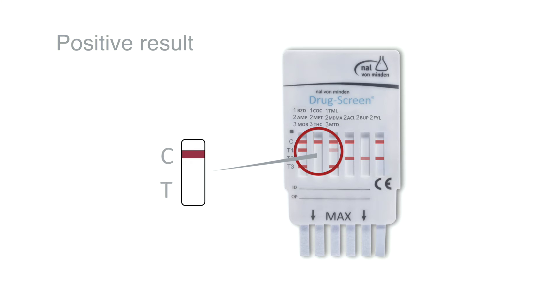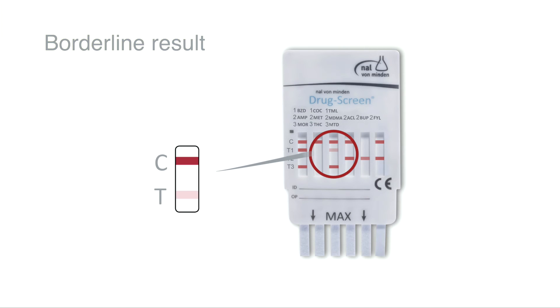The colour intensity of the test lines may vary between the different parameters or drugs. Only the complete absence of a test line should be interpreted as a positive result. Near cut-off concentrations can lead to weak test line intensities.